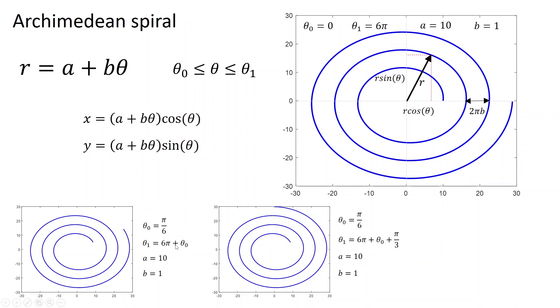Now, for example, if you select θ₀ as another number, in this case π/6, and θ₁ is 6π + θ₀, that means we will have three full turns, and start is from 30 degrees, basically, π/6, and end will be also at π/6.